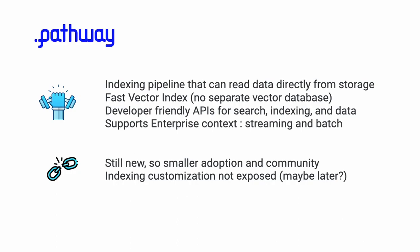As your enterprise needs evolve, you might need some vector indexing and database querying and transformation before data becomes an index or an embedding. Pathway has very powerful, friendly APIs for search, indexing, and data. It supports enterprise contexts and is the only platform that supports both streaming and batch — so you can have upstream data coming from Kafka, batch jobs, and LLM-type apps built. It is still new, so adoption is limited, and some indexing customization is not fully exposed yet. But the thinking behind this for an enterprise is just extraordinary.